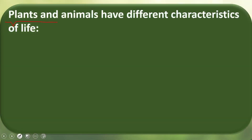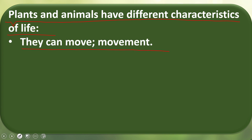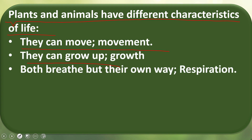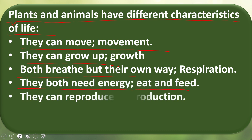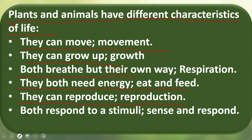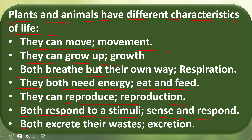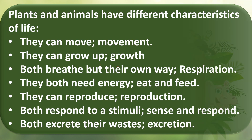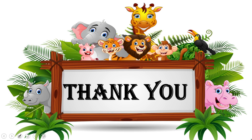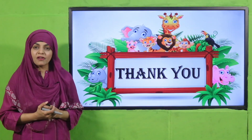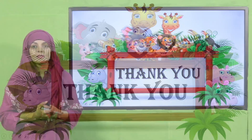In today's lecture we have learned that plants and animals have different characteristics of life. They can move, they can grow, they can breathe, they need energy — so they eat or they make food. They can reproduce, both respond to stimuli, and both excrete their waste — that is called excretion. I hope you have enjoyed today's lecture. Keep everybody around you safe, have a good day. Thank you so much, and Allah Hafiz.